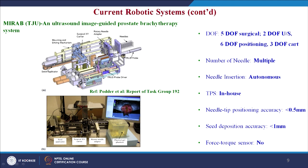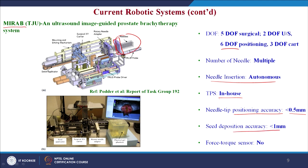Then comes MIRAB — the Multichannel Image-guided Robotic Assistant for Brachytherapy — also developed in the Department of Radiation Oncology at Thomas Jefferson University. It has 6 degrees of freedom and supports multiple needles inserted in parallel using a template for better placement. It has an in-house treatment planning system, autonomous needle insertion, needle tip positioning accuracy less than 0.5 mm, seed deposition accuracy less than 1 mm, and is not equipped with a force-torque sensor.